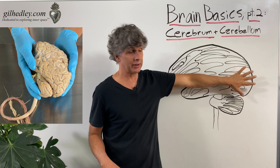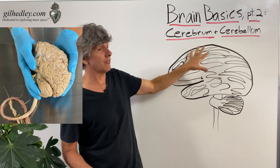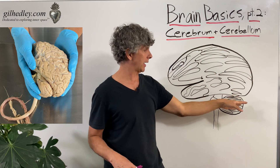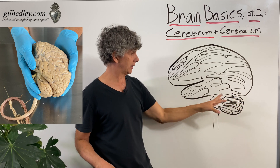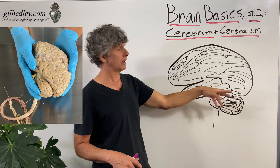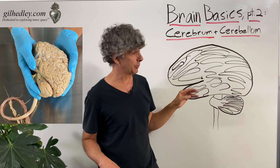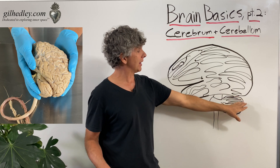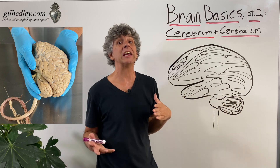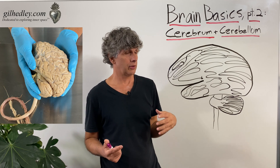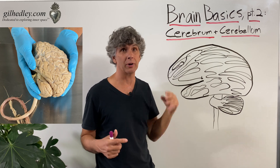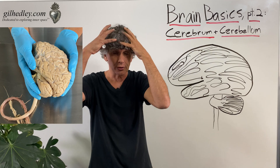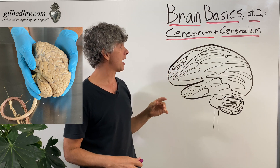The cerebrum is about 85% of the mass of the brain, and the cerebellum is more like 10% of it, with the extra bits adding up to 100. The cerebellum is kind of the hindbrain, or the smaller brain in the back of your skull, and the cerebrum sort of fills up the top.